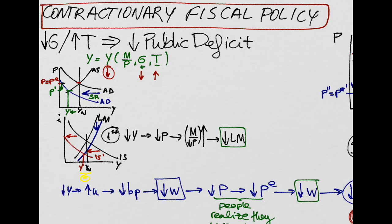Now, let's see what happens when the government implements a contractionary fiscal policy to decrease public deficit.